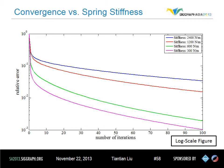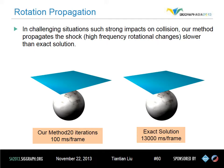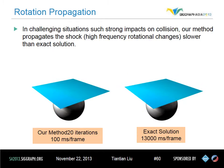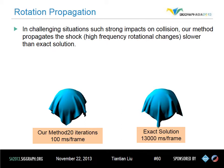We conducted experiments to see the behavior of our method with different spring stiffness values and spatial resolutions. Our method converges slower in higher spring stiffness systems, and slower in high-resolution systems, as expected. In challenging situations such as strong impacts and collisions, our method maintains simulation stability but propagates the shock wave slower than the exact solution. When paused, the wrinkles simulated by our method are less vivid than those of the exact solution — we believe this is because translational changes propagate immediately in the global step, while rotational changes only propagate during local steps. Given a limited number of iterations like 20, our method is only an approximation, but if allowed to run long enough, it converges to the same result as the exact solution.